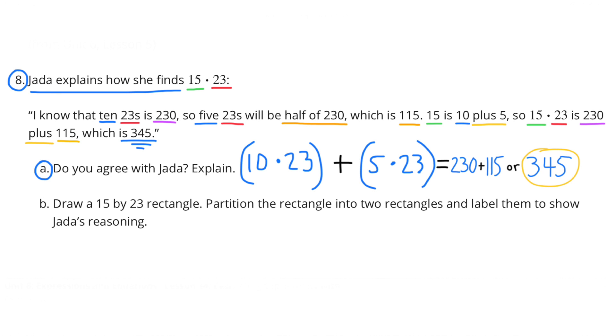Number 8. Jada explains how she can find 15 times 23. I know that 10 23s is 230, so 5 23s will be half of 230, which is 115.